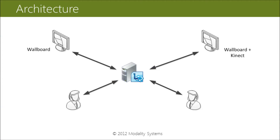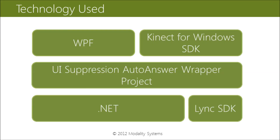The wallboard solution is a UI-suppressed Link SDK application. This means that any machine running wallboard is a separate Link user with their own SIP address. This lets each wallboard have its own presence status, and means that users can add different wallboards to their contact list. Kinect integration allows you to walk up to a wallboard and interact, place an outgoing call. It's an optional extra that some wallboards may have, though it isn't required and you can either use a mouse or run the wallboard as an incoming-only device. The wallboard solution is built on .NET, using the Link SDK.